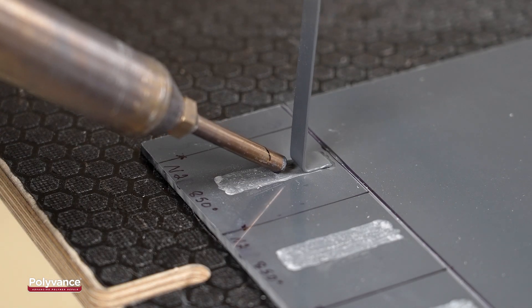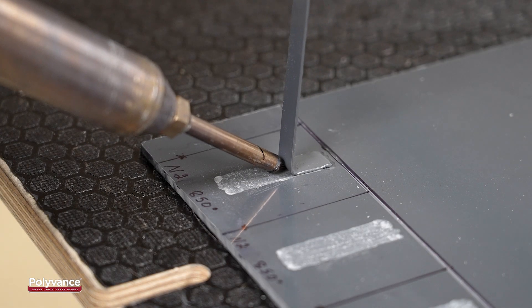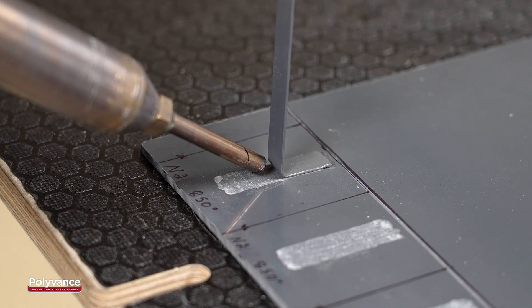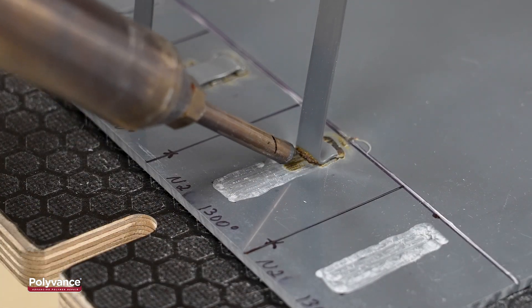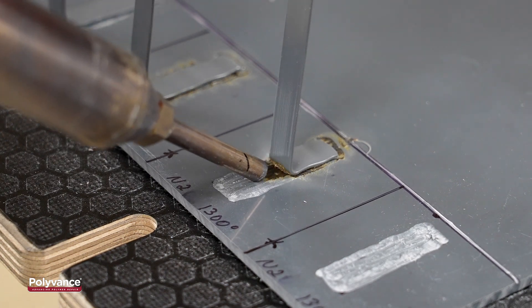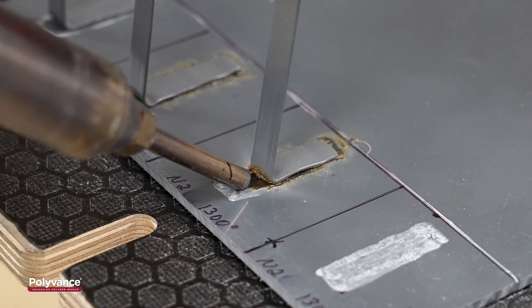Here, we are welding at the recommended power setting of about 48. You can see that the plastic melts cleanly with no discoloration. However, when PVC is welded at too high a temperature, the plastic is scorched and discolored.